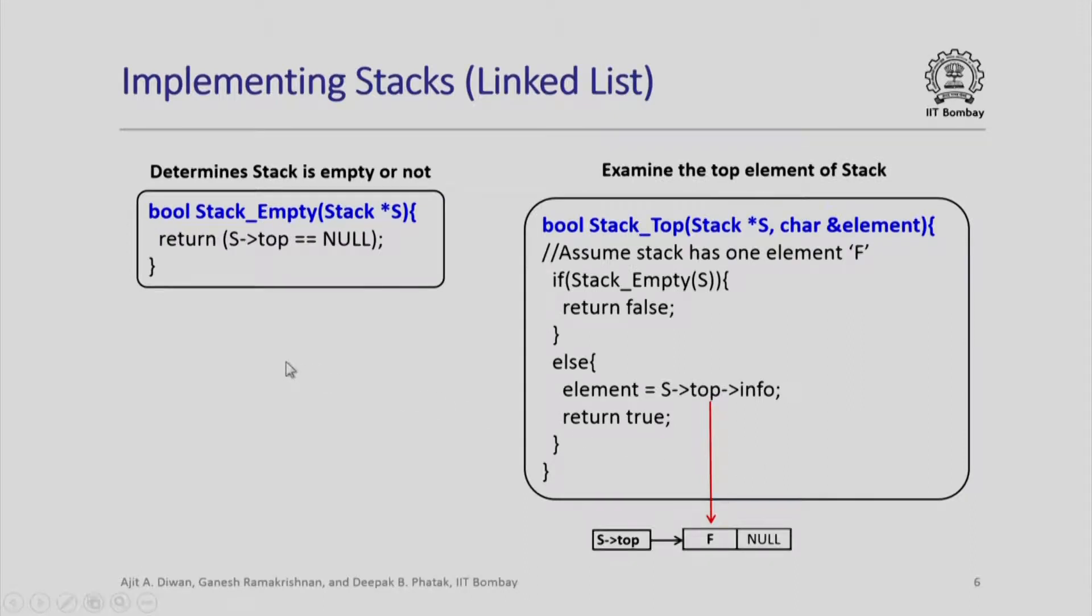To determine whether stack is empty or not is also equally simple. If the top points to null then the stack is empty, that is what we check and return. How do we examine the top element of the stack? Again simple. Suppose the stack has one element f, we check in this function if stack is empty we return false, that means there is no top element. Otherwise the element is returned as s top and the info path. So this is the node which is pointed to by s top, the information it contains is f and that is what will be returned in the element and of course the function will return true because it has found one element at the top.